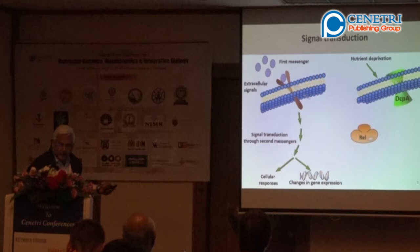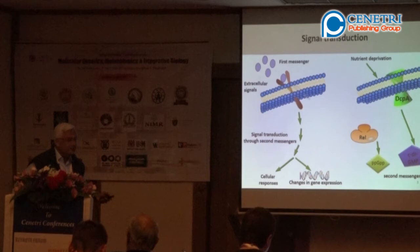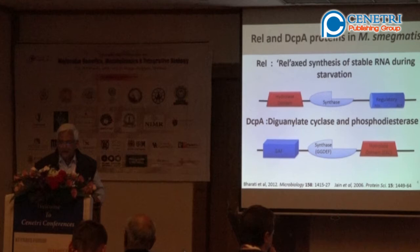Nutrient deprivation is the first messenger we work on, and it leads to the second messenger cyclic-di-GMP. There are two proteins which make ppGpp and cyclic-di-GMP — very small molecules, 600 to 800 molecular weight — and they regulate gene expression, mostly by binding to RNA polymerase in transcription.